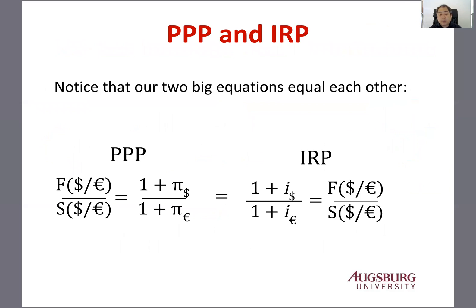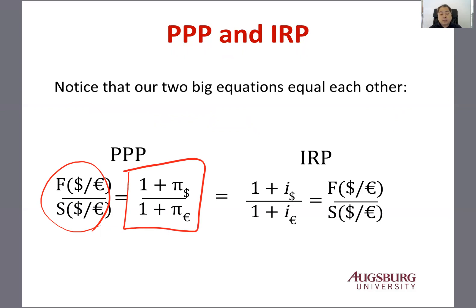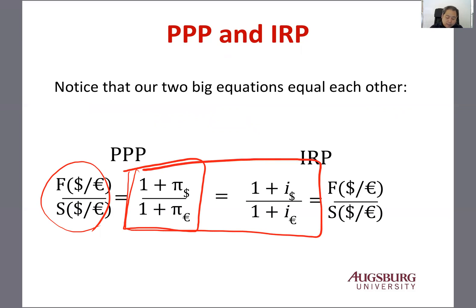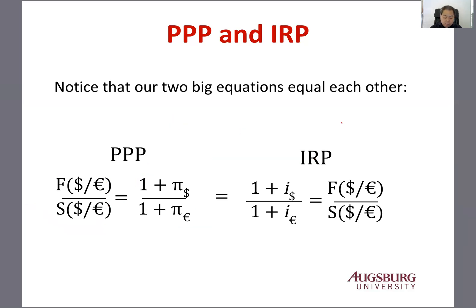Note that using PPP, the forward rate divided by the spot rate equals (1 plus domestic inflation) divided by (1 plus foreign inflation). And using Interest Rate Parity (IRP), it should also equal (1 plus domestic interest rate) divided by (1 plus foreign interest rate). Linking these two means (1 plus U.S. inflation) divided by (1 plus foreign inflation) equals (1 plus U.S. interest rate) divided by (1 plus foreign interest rate). So the difference between inflation rates is close to the interest rate differences, if you believe both parities.